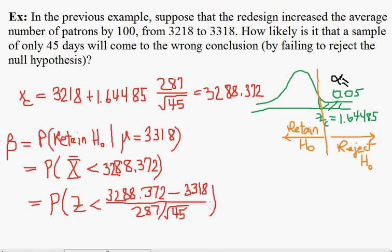All right, let's catch our breath here. The old mean of 3218 was used to construct this number, 3288, and that's this number right here. So the old mean is reflected inside of this number, while the new mean is reflected inside of this number.